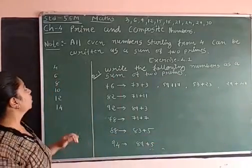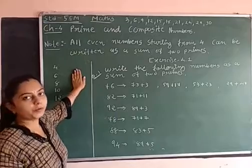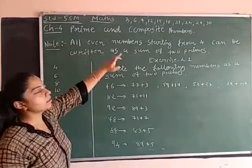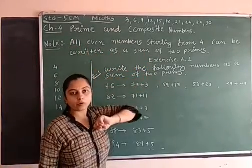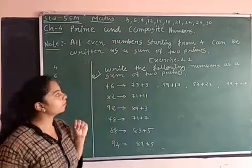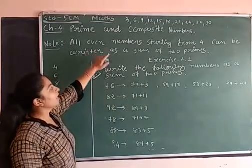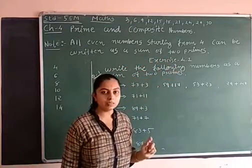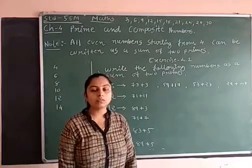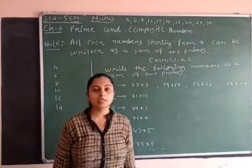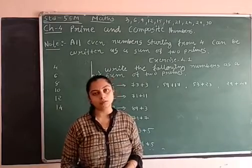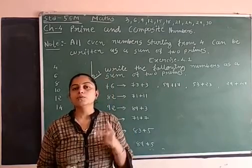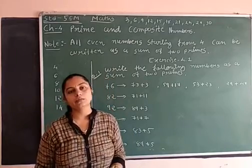Okay, students. Now, we will go for the next point. That is one important note you have to remember. All even numbers starting from 4 can be written as a sum of 2 primes. Any even number starting from 4 can be written as a sum of 2 prime numbers. We have already discussed prime numbers - only 2 factors it has.